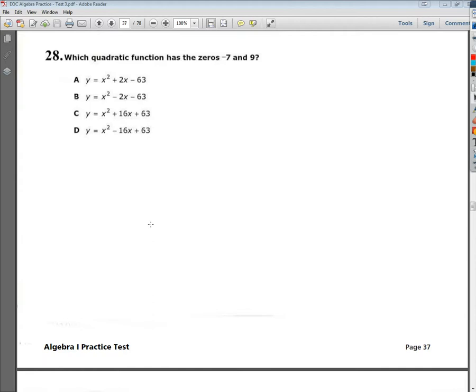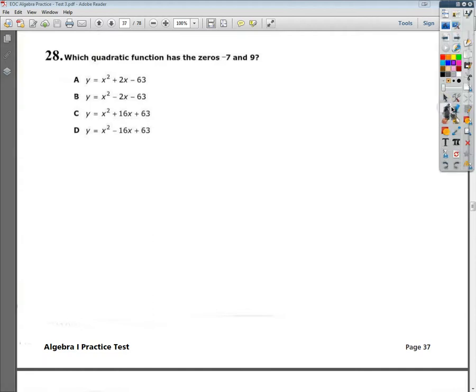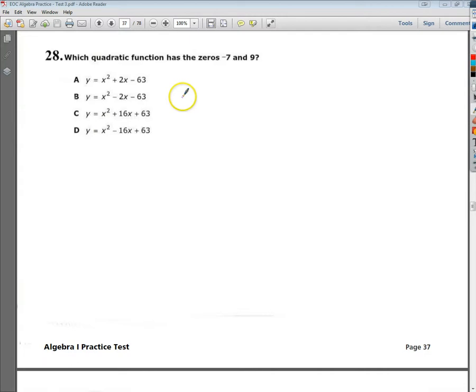Now for me, I like this type of problem just because there's so many different ways that you can solve it, which is kind of cool. One of the ways that you can solve it is to factor the quadratic. So I'm going to try to see what can give me negative 7 and 9. And remember, in order for it to be a 0, I have to set the answers next to 0 so I can factor them out.